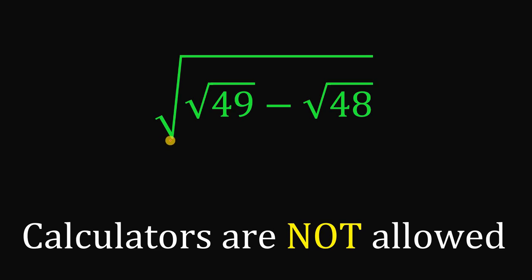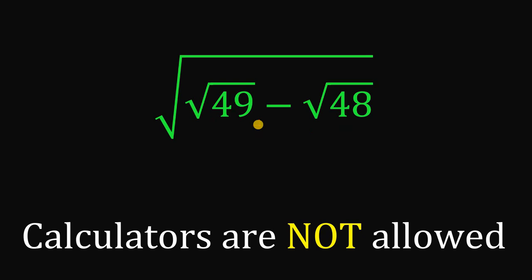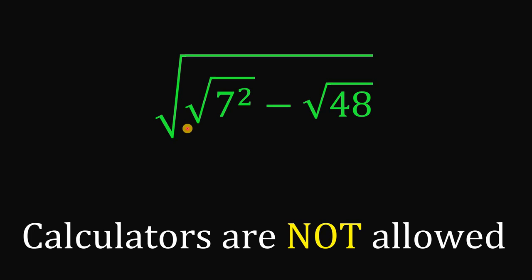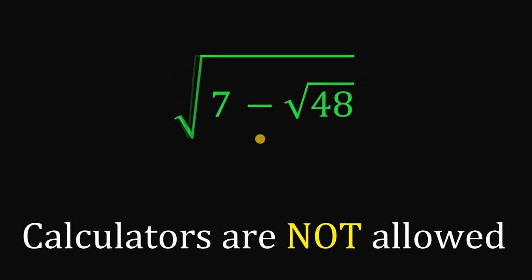We're given the square root of the quantity: square root of 49 minus square root of 48. Now, one thing we notice here is this 49. This 49 can be written as 7 raised to the power of 2, or 7 squared. And square root of 7 squared gives us nicely 7.